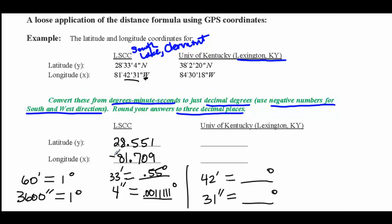We are west, therefore we need this indicated as a negative. Now would be a good time for you to pause the video and come up with a decimal equivalence to three decimal places for the University of Kentucky's positions that are given in latitude and longitude degree minute second, then resume the video. If you've done this correctly, you found that the latitude for University of Kentucky in decimal form is 38.039 and the longitude is negative 84.505.